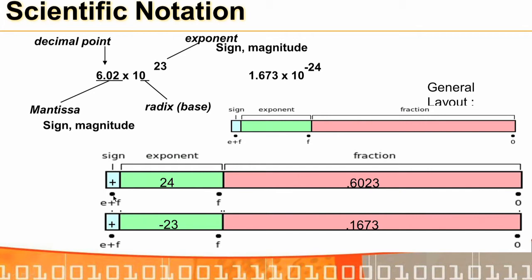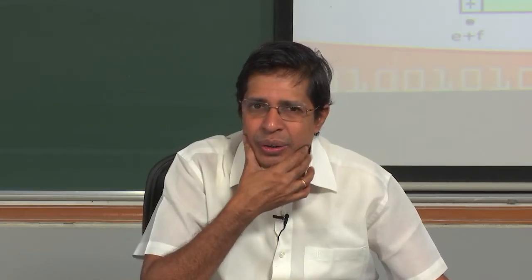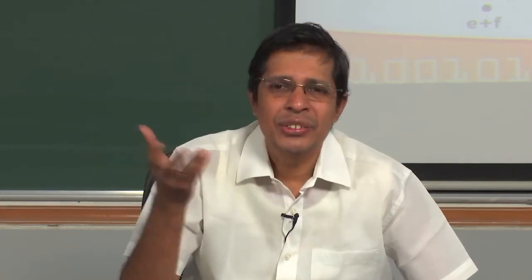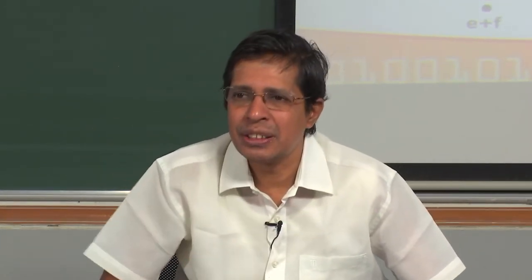We want a standard because there are infinite ways to represent the same number. For example, 6.023 × 10²³ can also be 60.23 × 10²², or 0.062023 × 10²⁵, and so on. If two computers represent it in different ways, programs cannot be ported across systems — a program for an Intel machine could not run on an IBM or Sun SPARC machine.